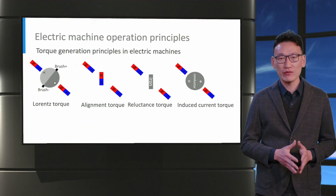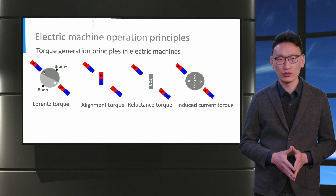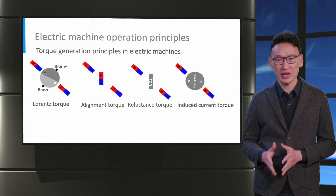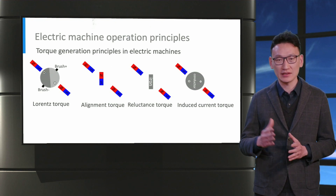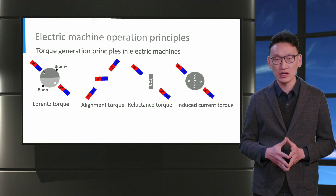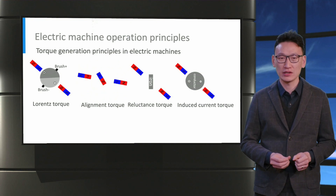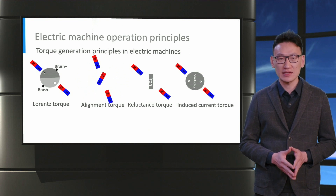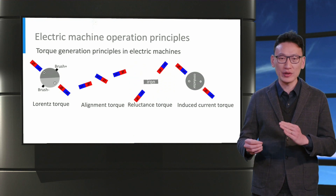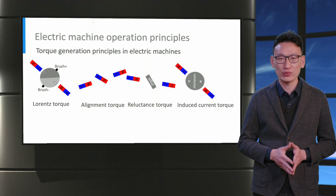We will see the different operation principles of various types of electric machines. The first one is based on the Lorentz force principle, where permanent magnets are stationary on the stator and a constant current is passed through the rotor windings through a commutator, which produces a force on the rotor windings that rotates the rotor. The second one operates based on the alignment torque between opposite magnetic poles, where both rotor and stator are equipped with magnetic poles, and the rotor rotates at the same speed as the stator magnetic poles — defined as the synchronous speed. The third principle is the reluctance torque, where torque is produced because the rotor iron poles tend to align to the magnetic flux lines so that minimal magnetic reluctance is achieved. The rotor here also rotates at synchronous speed.